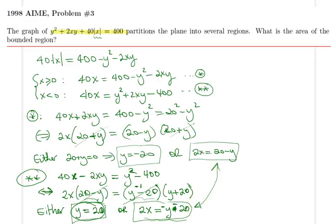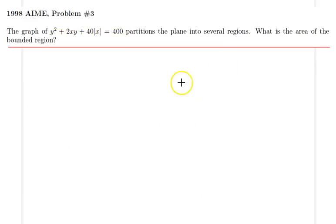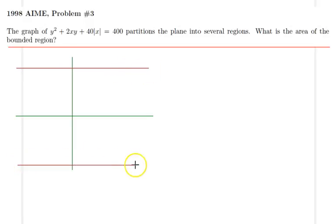We have the coordinate axes. The four lines would look like... well, let me just draw the lines and then we can discuss their implication. This is y = 20 and y = -20, and then we have another one which goes through something like that.